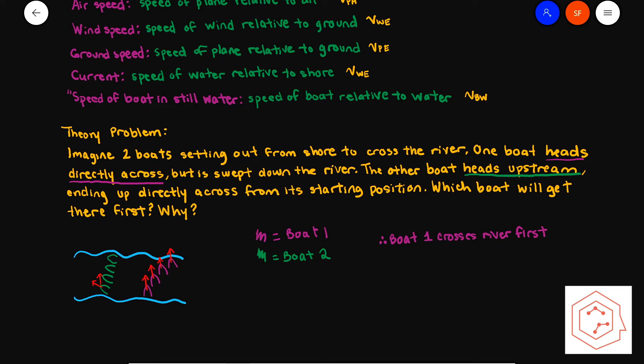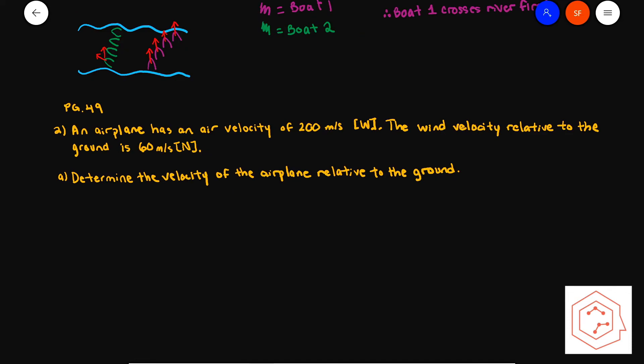Moving on to Nelson chapter 1.6, question 2: an airplane has an air velocity of 200 meters per second west. The wind velocity relative to the ground is 60 meters per second north. Part A asks for the velocity of the airplane relative to the ground. The velocity of the plane relative to the air is 200 m/s west, represented as V_pa. Wind relative to ground is V_ag at 60 m/s north. We need V_pg, so V_pg equals V_pa plus V_ag.